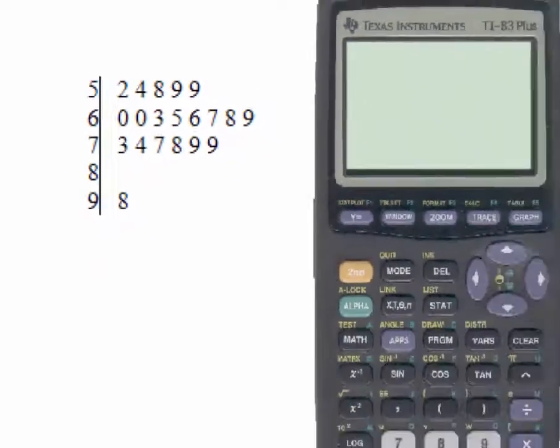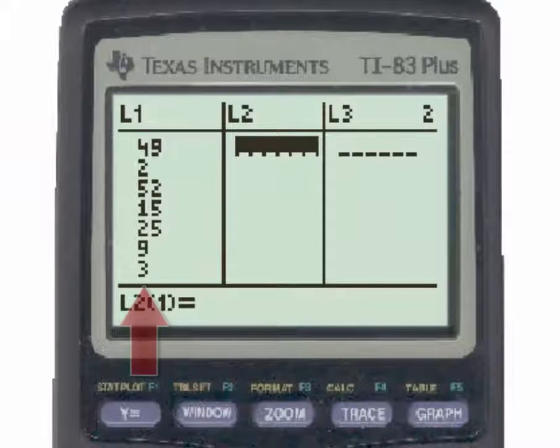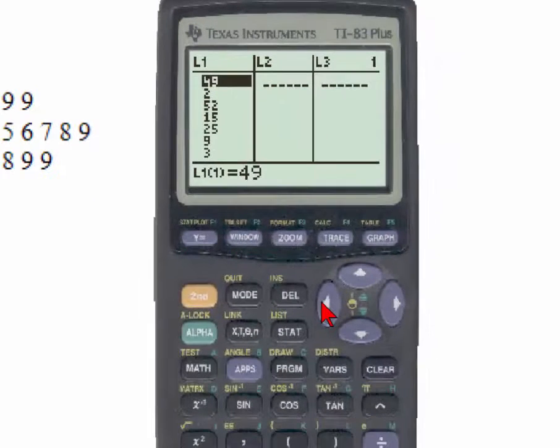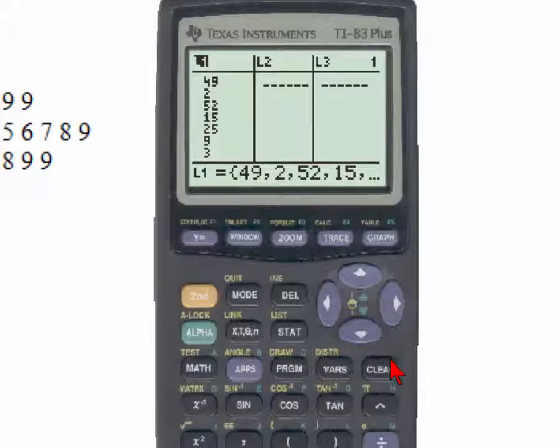First, we'll turn on the TI-83, and we can see list one has data in it, so we're going to clear list one by putting the cursor on the title for the list, hitting the clear button followed by the enter key.